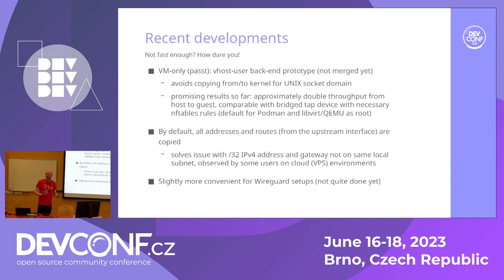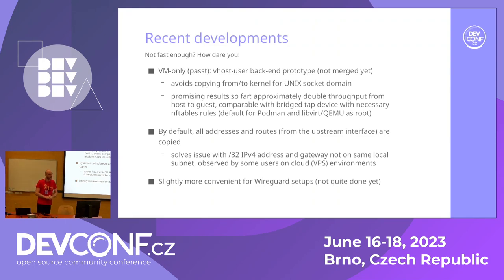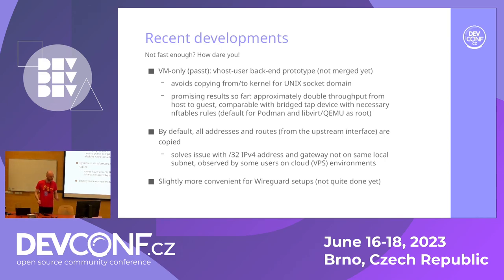Let me cover recent developments, just in case you followed this project recently. Somebody said that it's not fast enough. What can we do better? This only applies to VMs, so it's not really pasta. We had a Unix domain socket to QEMU — that means copy to the socket, copy from the socket, and QEMU needs to do that. We can now bypass QEMU altogether with VIOS user, and it's actually faster than whatever you could do with tun/tap and a bridge.